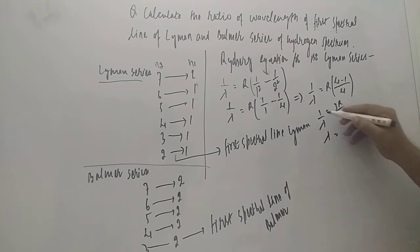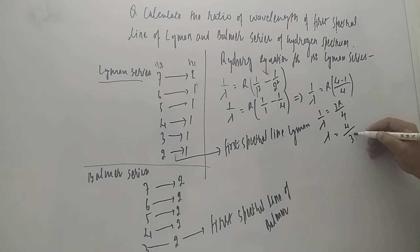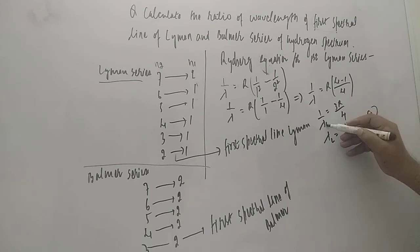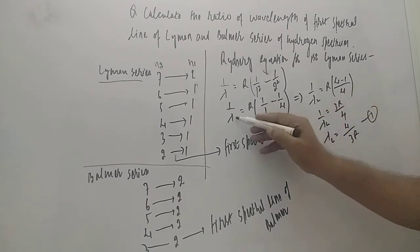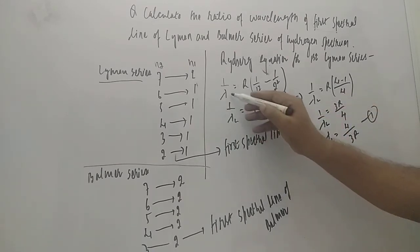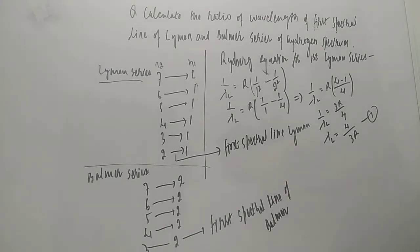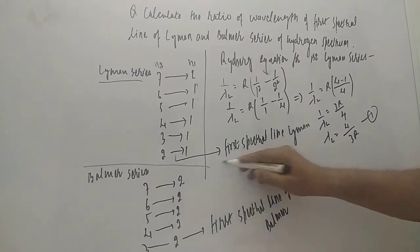Cross-multiplying, lambda equals 4 by 3R. This is equation 1 — lambda L (for Lyman series) equals 4 by 3R.